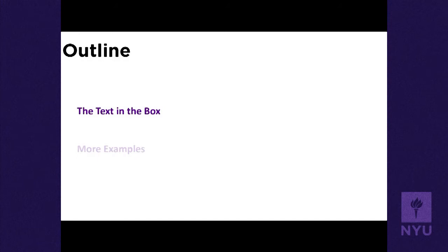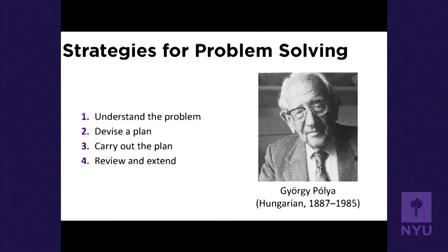So what is the framework we use for solving this optimization problem? It's basically a four-step process. Step one is to understand the problem — it takes some time to understand what the problem is actually about. Step two is to devise the plan; in this case, the plan is to find the maximum or minimum value of a function. Step three is to carry out the plan — this is doing the actual calculus behind the maximization or minimization. And step four is to review and extend.